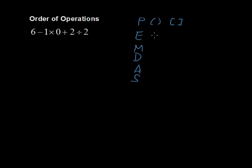E is exponents, so if you have something like 5 squared, this 2 is the exponent. So you do the exponents before you do multiplication and division.